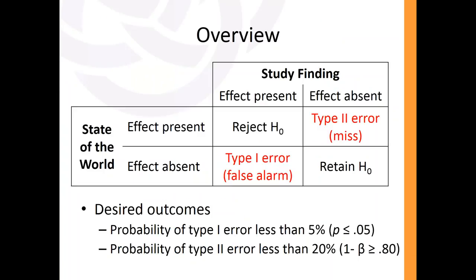Generally speaking, there are two things we need to consider. One is what the actual state of the world is — this is what we're trying to find out by conducting a study. Our study could find that there is an effect present or that the effect is absent, and that finding could or could not reflect the state of the world. If we find the effect is present and it is indeed present, we reject the null hypothesis and conclude there is an effect.